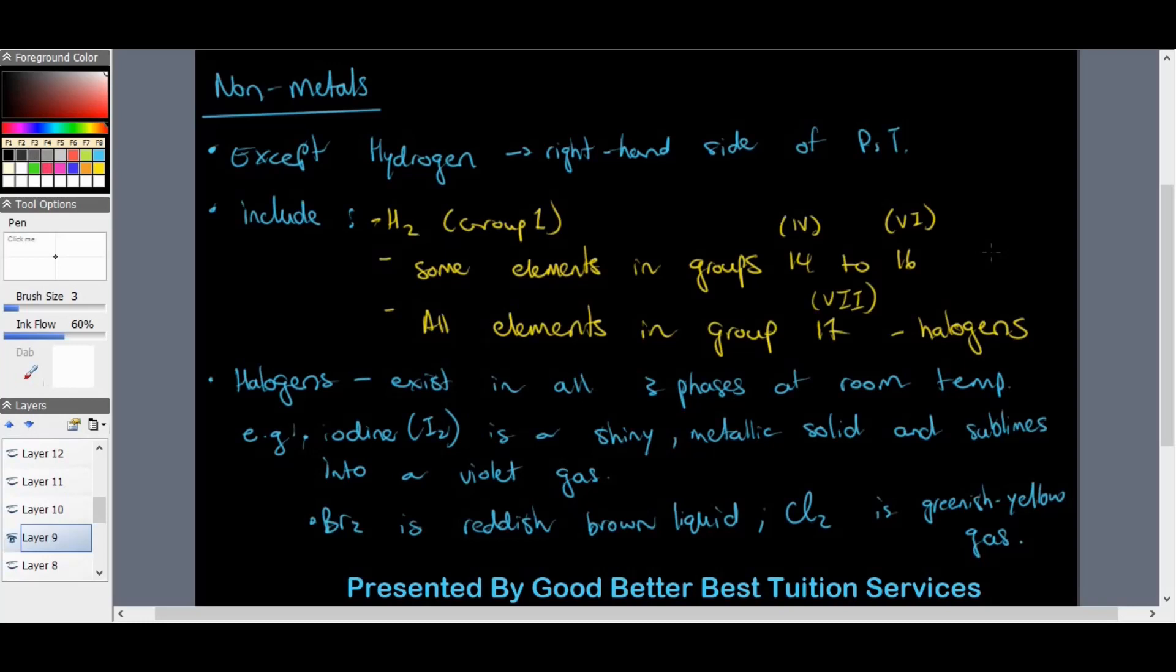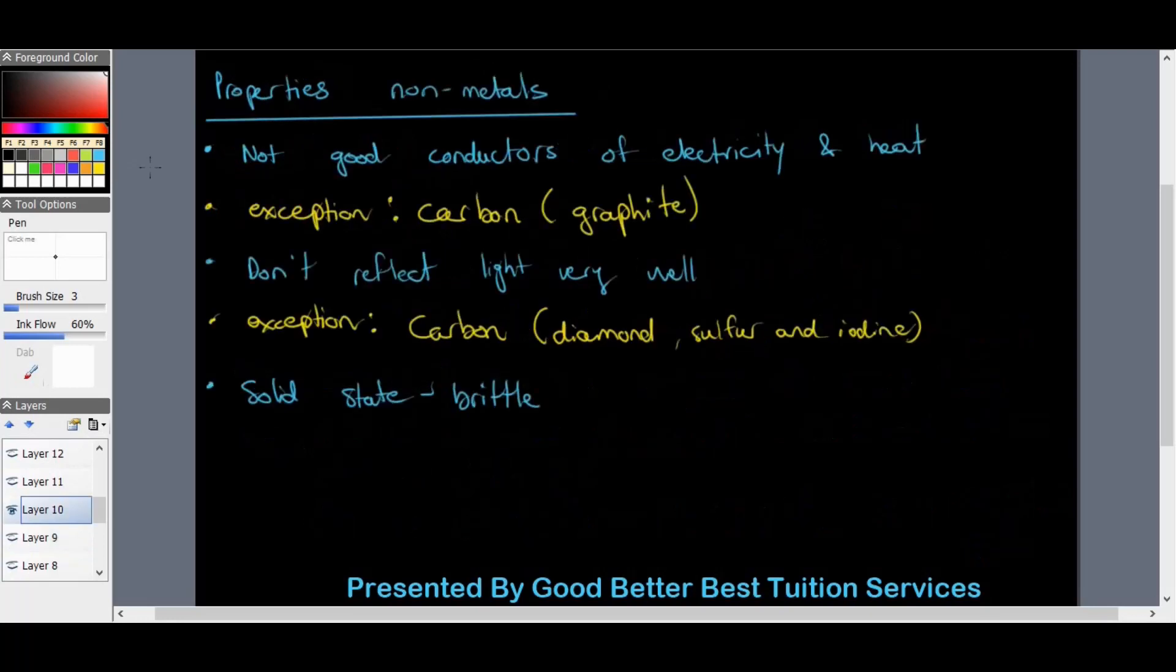Properties of non-metals include that they are not good conductors of electricity or heat, with an exception of carbon in the form of graphite. Non-metals also don't reflect light very well with the exception again of carbon found in diamonds, sulfur, as well as iodine.